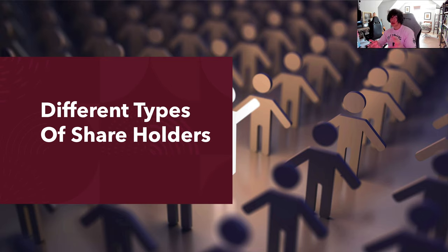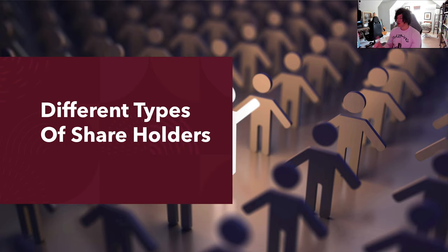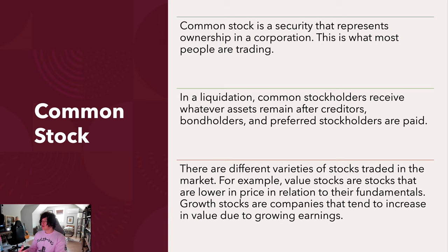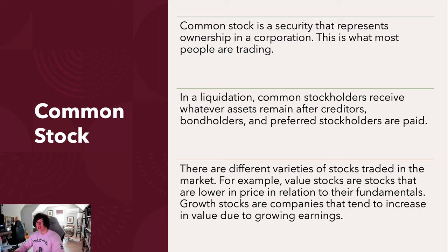There are different types of shareholders. When I say 'retail,' I'm talking about everyday traders like you and me — no one in the stock market can proclaim they're a professional trader without being officially designated by the exchanges. As a retail trader in XYZ company, you're trading what's known as common stock, which represents ownership of a corporation. In a liquidation — meaning the company goes out of business — you as the common stockholder receive whatever assets remain after creditors, bondholders, and preferred stockholders are paid out. You're the low man on the totem pole.